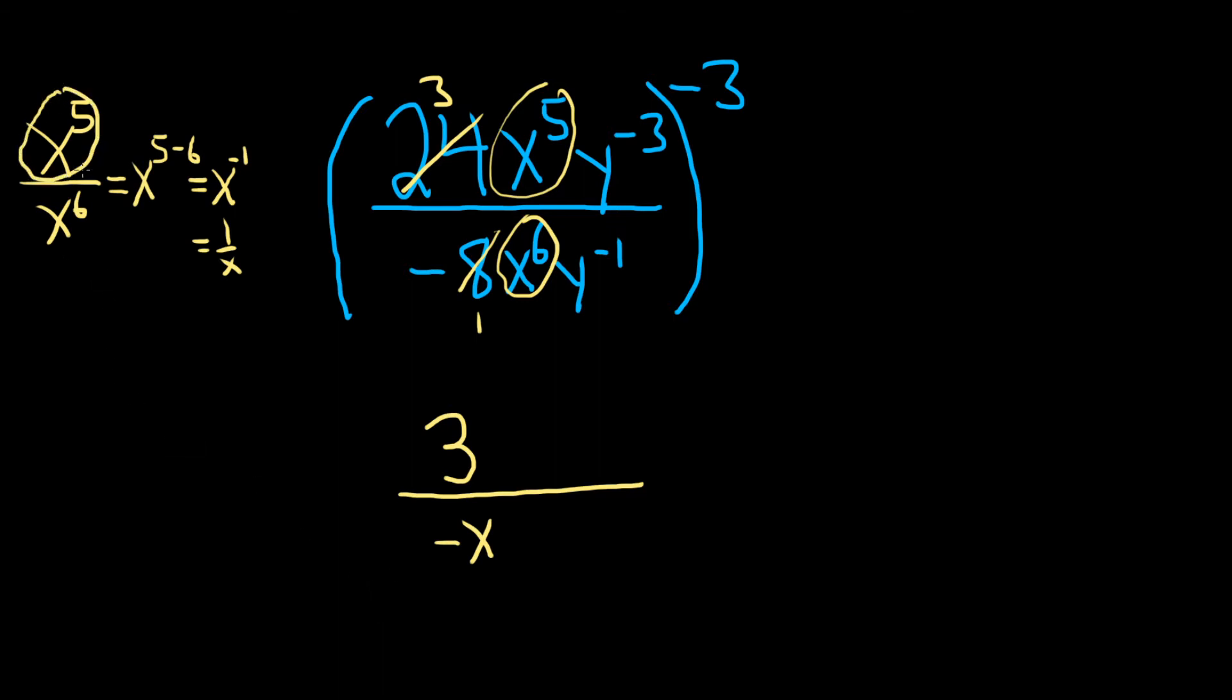We have five copies of x here. We have six down here. So we're going to lose five of them on the bottom. So we're left with one on the bottom. You see, because five of them are going to cancel, right? You have six of them down here and five of them are going to cancel. So you're left with one of them. That takes care of the x's.